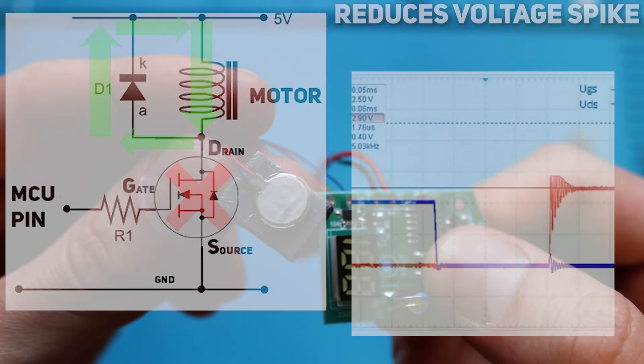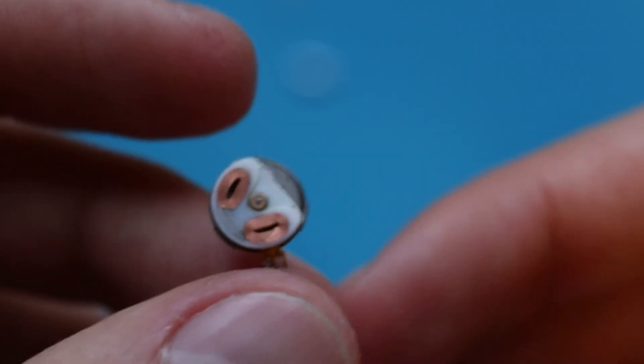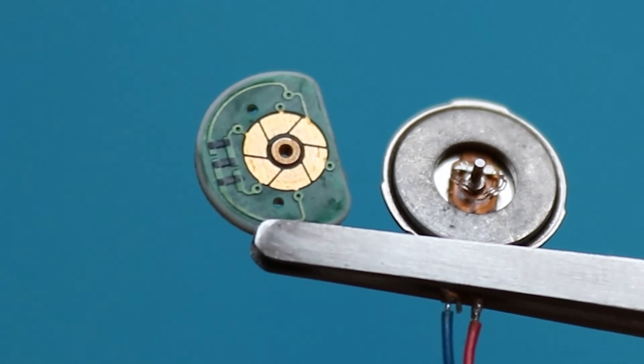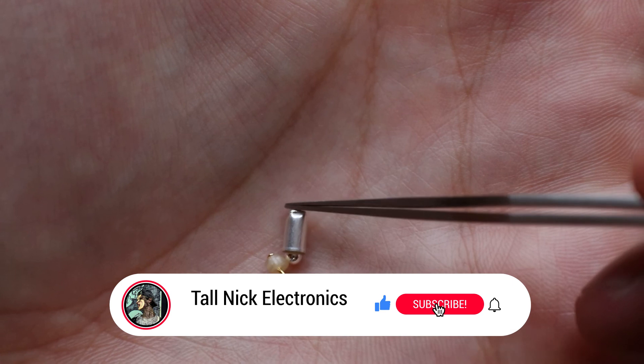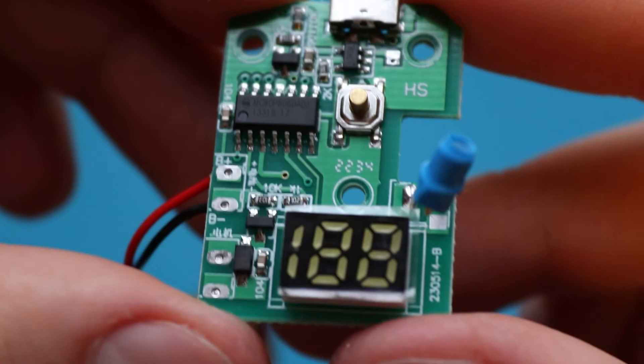And the solution is a diode added in parallel to the inductive load, in this case in parallel to the DC motor. Such a diode creates an alternative path for current and reduces voltage spike significantly. So if you ever use such a circuit, don't forget about the diode. As you can see, disassembling electronic devices provides a lot of different knowledge and if you want to learn more popular and interesting solutions in electronics and engineering with real examples, subscribe and check my other videos. You will find a lot of interesting stuff.